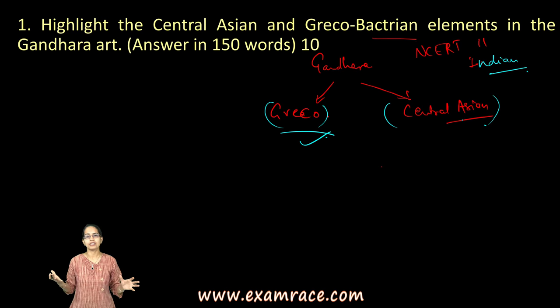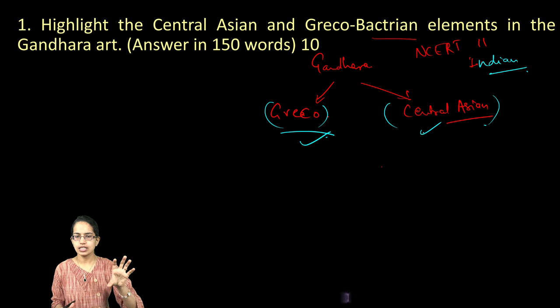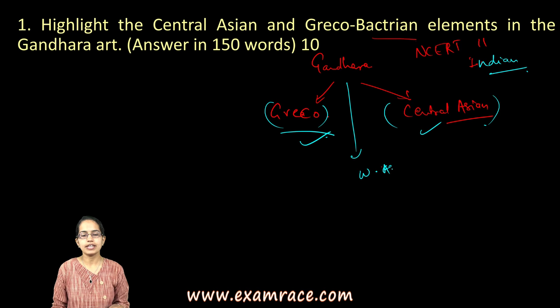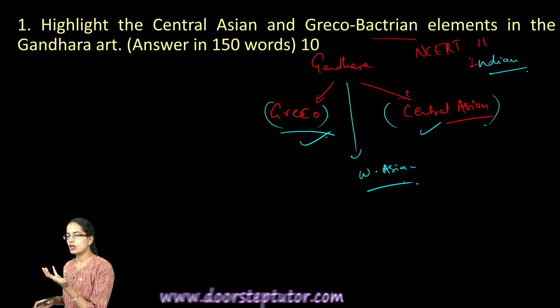You need to differentiate the major features from Greco-Bactrian versus Central Asian. There was also a West Asian style, which talked about conical caps, worship of fire as in Iranian culture, and a focus on naturalistic features of human life. These are the key elements to highlight in your answer.